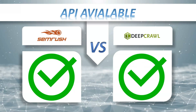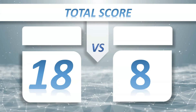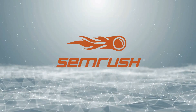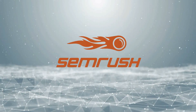So let's see the total score: SEMrush 18, DeepCrawl 8. And the winner is SEMrush.